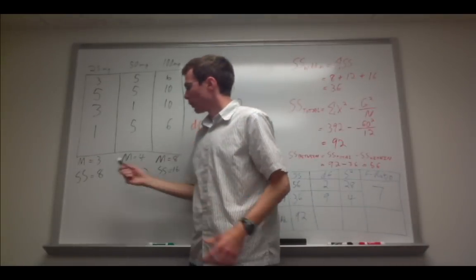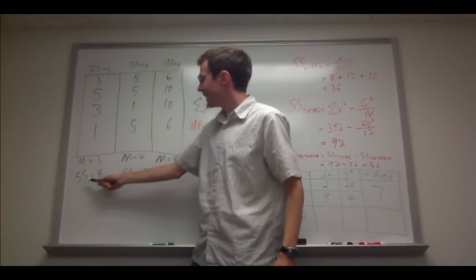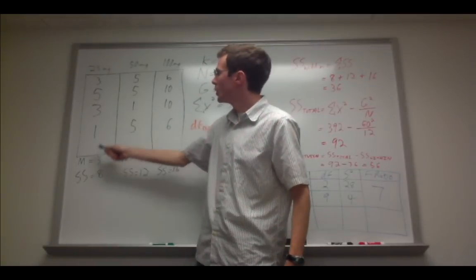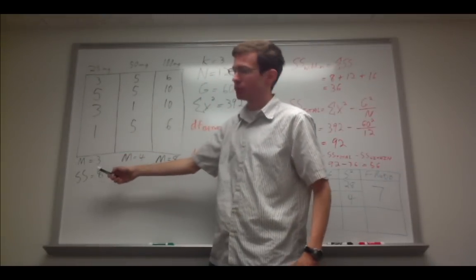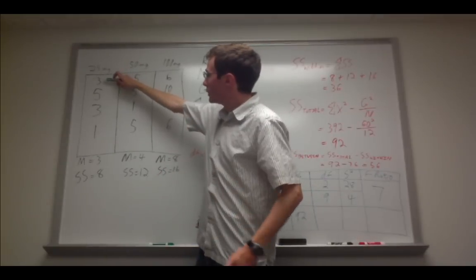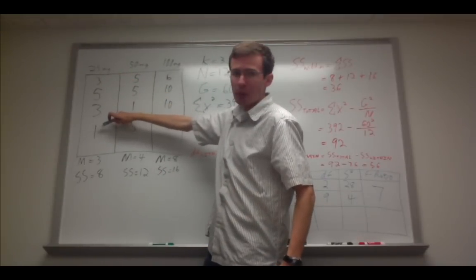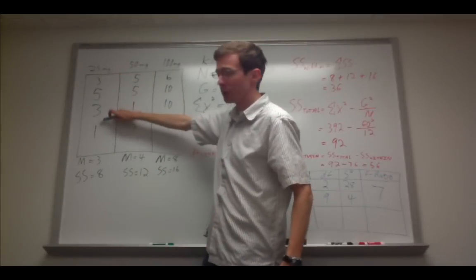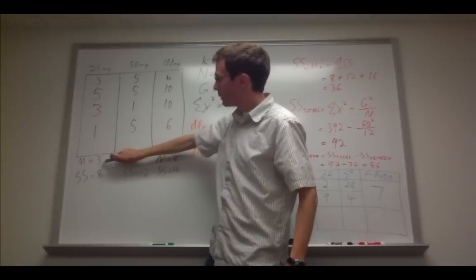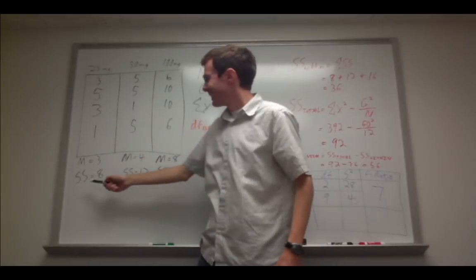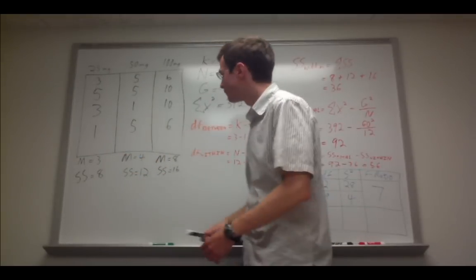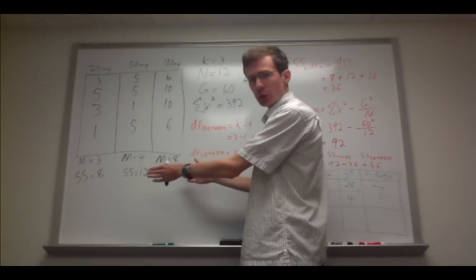So for each of these groups, we're going to calculate the mean and the sums of squares for each column. For example, for this column, we simply add up all of these, divide by 4, which is the number of people in this group, and we get a mean of 3 and a sums of squares of 8. Do that for all of the other groups here.